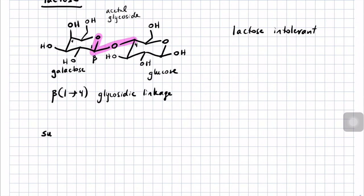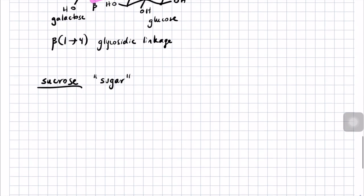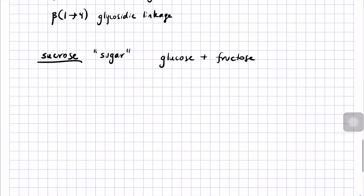The last common sugar I want to show you is sucrose — when people say 'sugar' or 'table sugar,' this is usually what they mean. Sucrose is a disaccharide between glucose and fructose. Fructose is actually an isomer of glucose — fructose is a five-membered ring sugar with oxygen in the ring. We call fructose a furanose: a five-membered ring sugar.